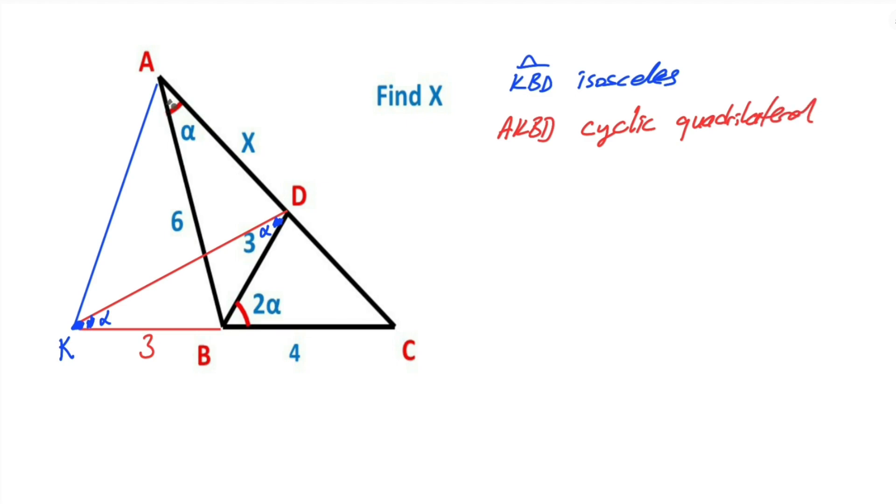Let's draw the circumcircle of this quadrilateral like this. If here is alpha, this angle here must be equal alpha because they have the same arc.